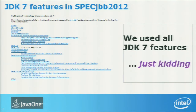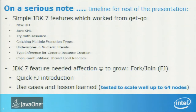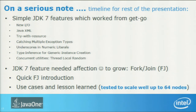We didn't use all JDK7 features — that was just a joke. Here is the real list. The font size indicates time allocation: smaller font means less time, bigger font means more time. The quick features are: New I/O, Java XML, try-with-resource, catching multiple exceptions, underscore numeric literals, type inference, and thread local random. The main discussion will be on the more complex part — using fork/join. I expect to cover the first set in seven or eight minutes, then spend most time on fork/join.